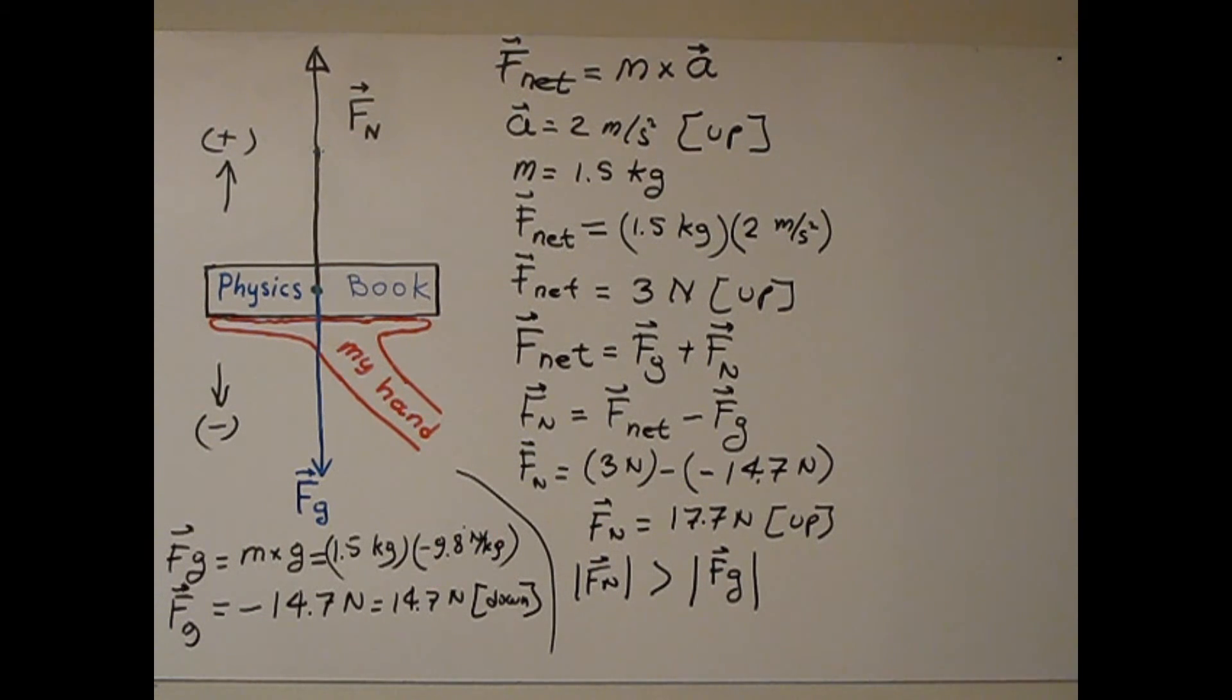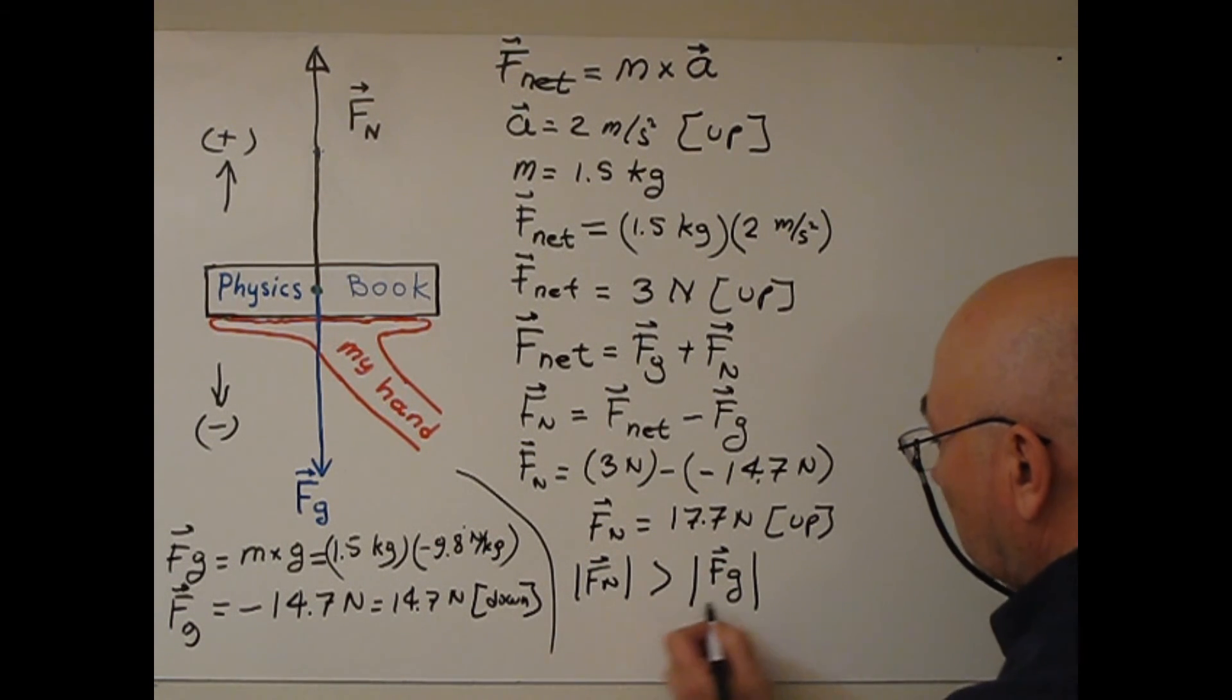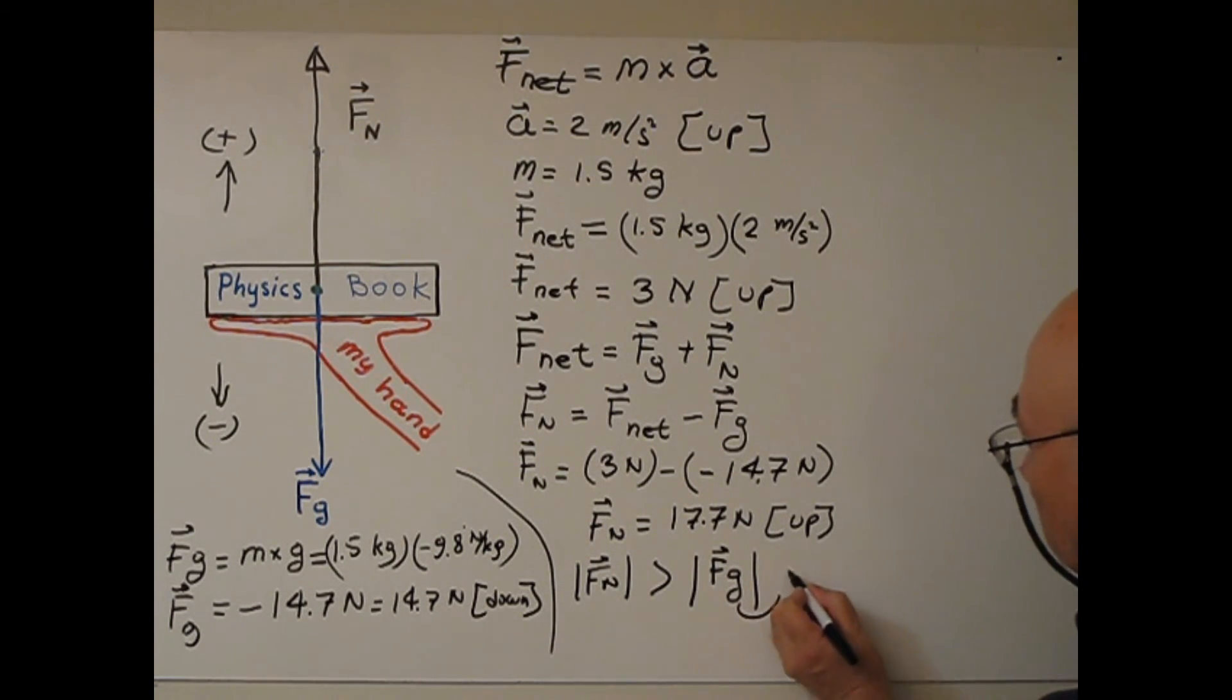So magnitude, so Fn, Fg will be true weight. Weight of the book. This is the true weight of the book. As long as location does not change, true weight of the book does not change.